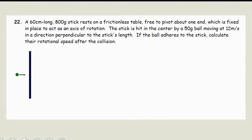Congratulations, you've made it to your very last in-class practice problem for the semester. A 60 centimeter long, 800 gram stick rests on a frictionless table, free to pivot about one end which is fixed in place as an axis of rotation. The stick is hit in the center by a 50 gram ball at 12 meters per second in a direction perpendicular to the stick's length. If the ball adheres to the stick, calculate their rotational speed after the collision.